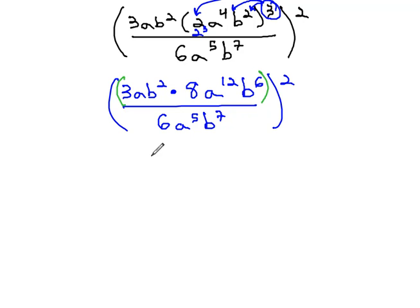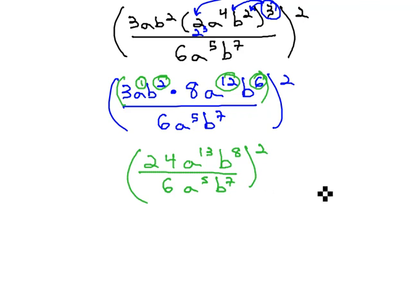Multiplying the numbers, 8 times 3 is 24. For the a's, the product rule tells us that if we have a to the 1st and a to the 12th, we add those exponents together, showing there's a total of 13 a's multiplied in the numerator. Similarly, with the b's, we'll add the exponents 2 and 6 to find a total of 8 in the numerator. This is still all over 6a to the 5th b to the 7th, and the entire thing is still squared.